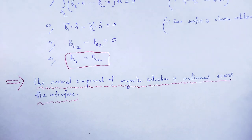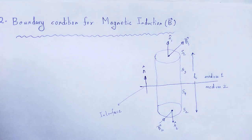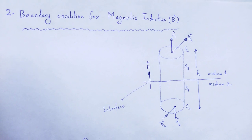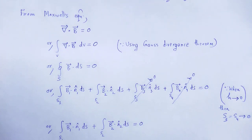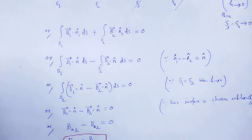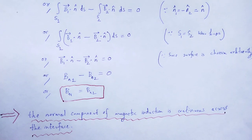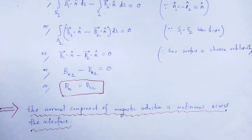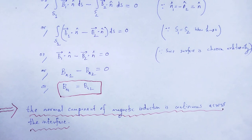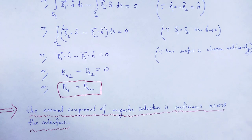So with the help of this lecture we understand the boundary condition for magnetic induction B vector using Maxwell's equations. This is the full calculation, and the final result is that the normal component of magnetic induction is continuous across the interface. With these useful and informative notes, let me wind up the session. Thank you.